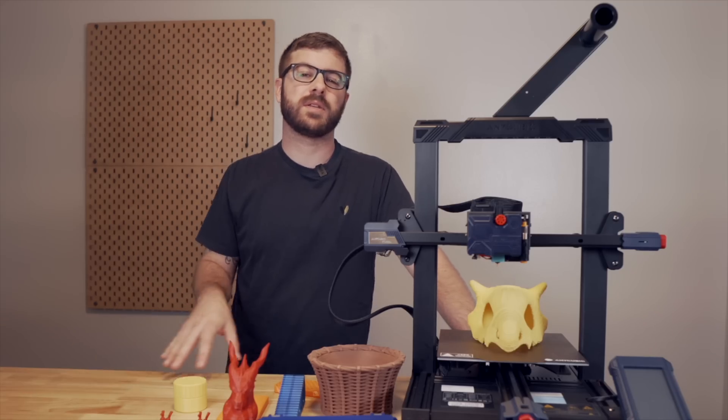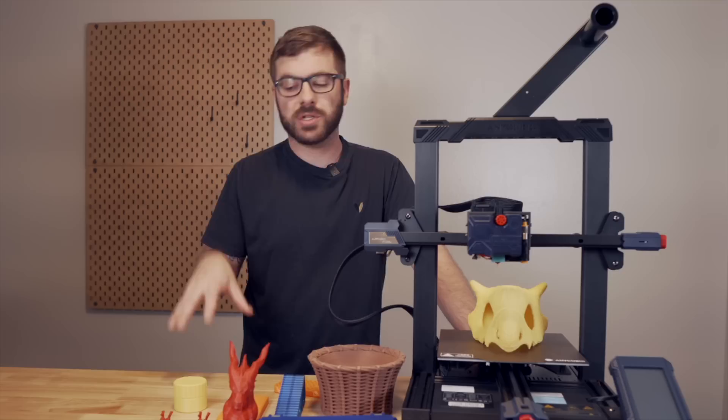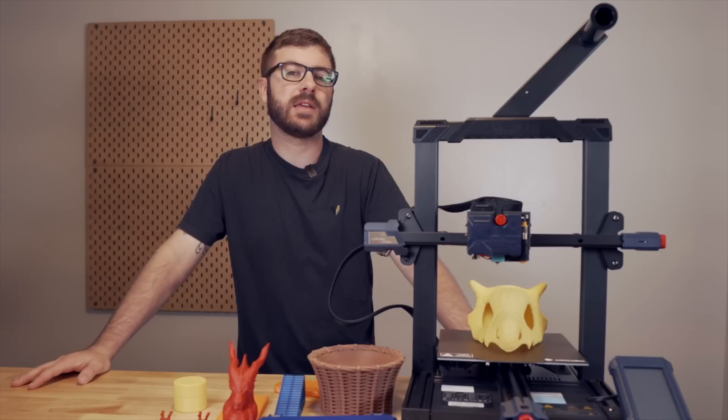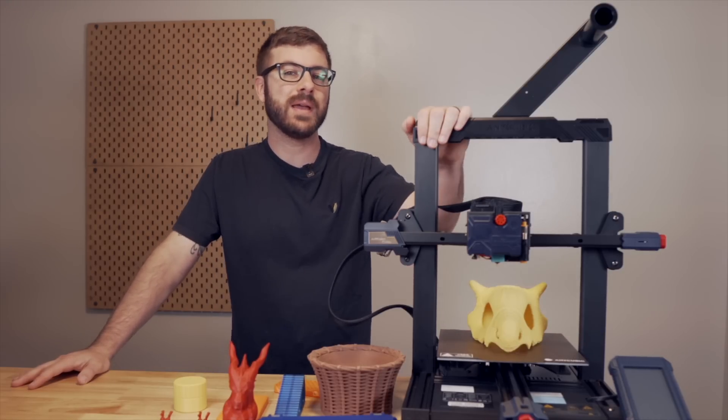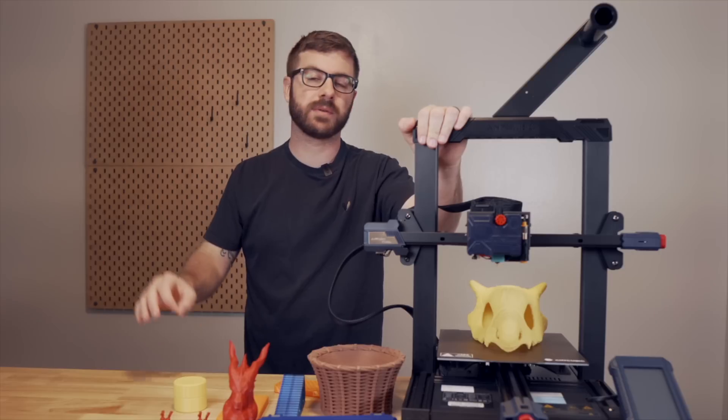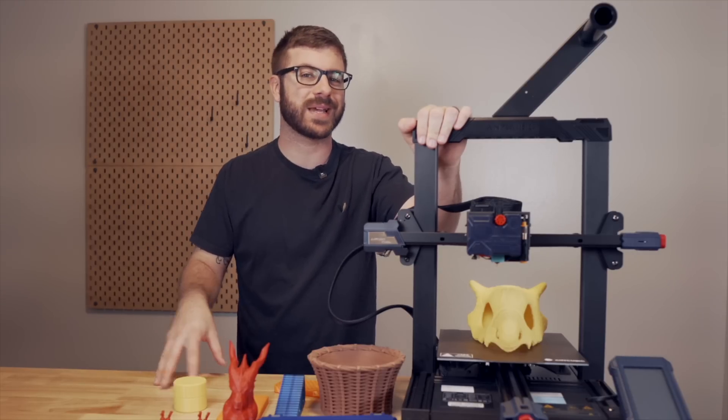Once I was done with the test print, I was ready to slice up some models of my own, so I took the included microSD card and hopped over to the computer. Anycubic does provide Cura profiles for the Cobra, but I really wanted to use Prusa Slicer, so I started off with the Artillery Genius profile and just made some slight tweaks to it.